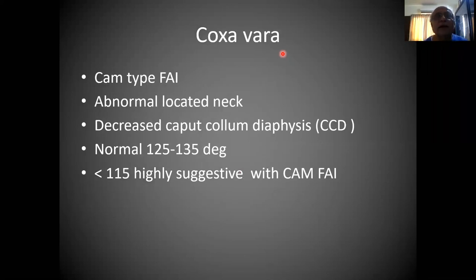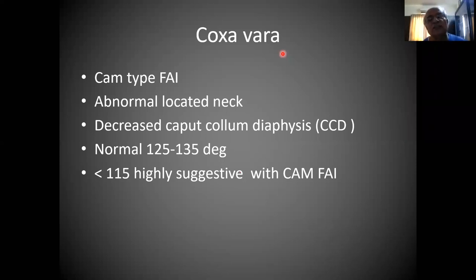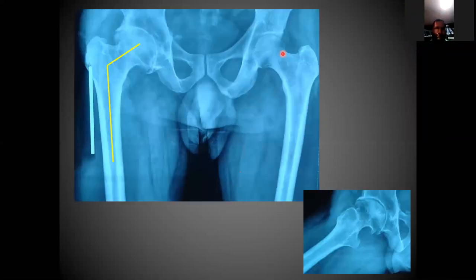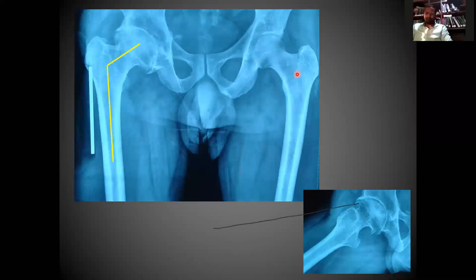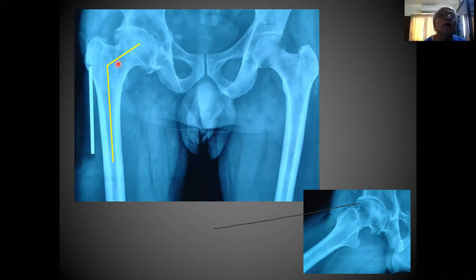CAM-type FAI radiographic signs: pistol grip deformity, CCD angle less than 125 degrees (coxa vara), horizontal growth plate sign, alpha angle more than 55 degrees, femoral head-neck junction offset less than 8 mm, and femoral retroversion. In coxa vara, the CCD angle is abnormal — normal is between 125 and 135 degrees. If less than 115 degrees, it usually suggests coxa vara. These patients at age 40 or 50 will develop joint reduction and arthritic changes.